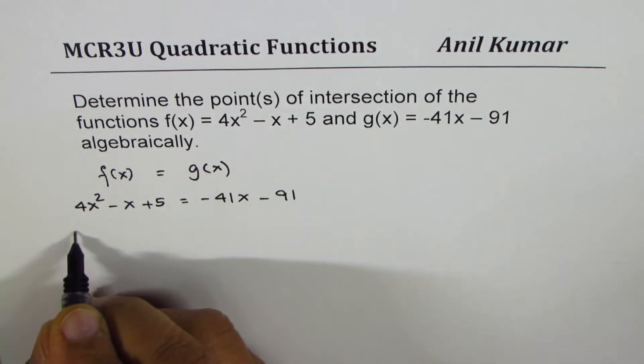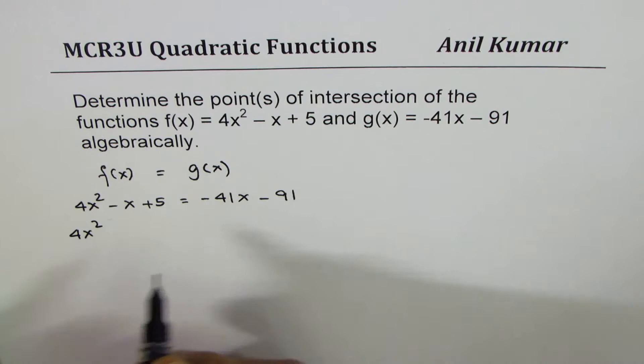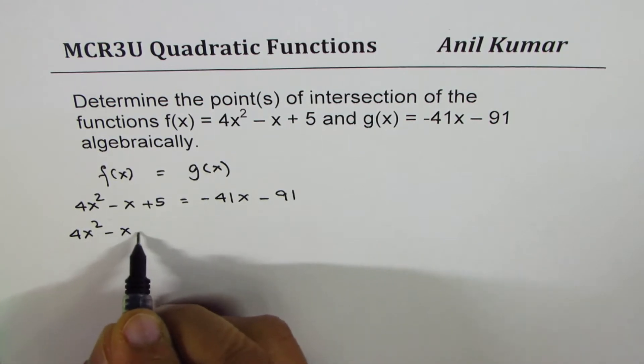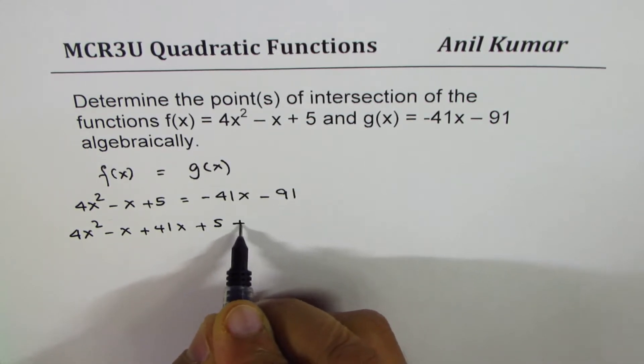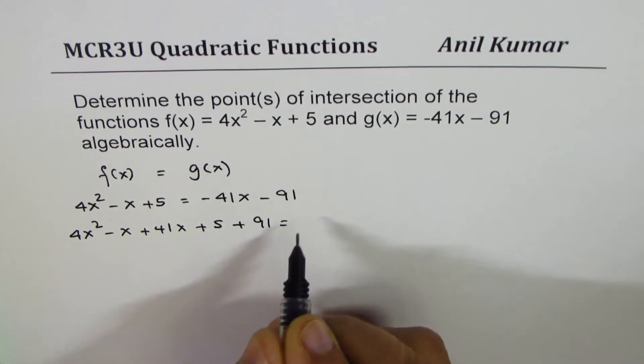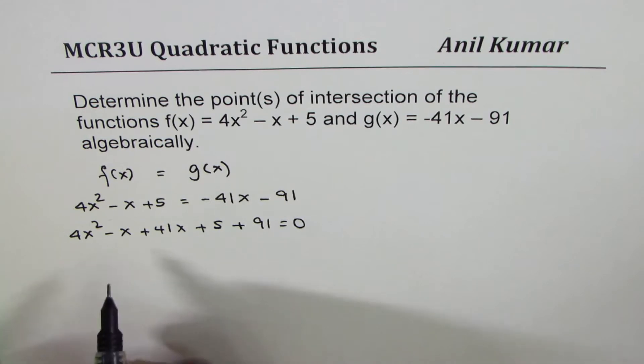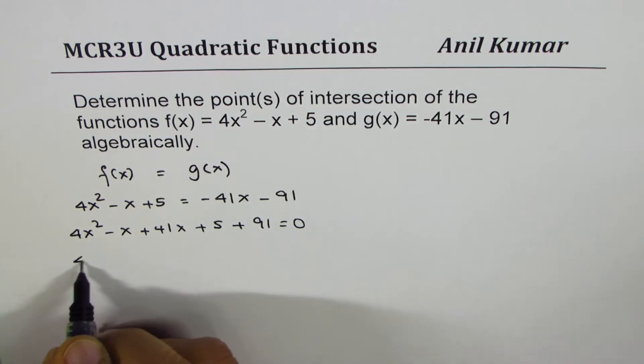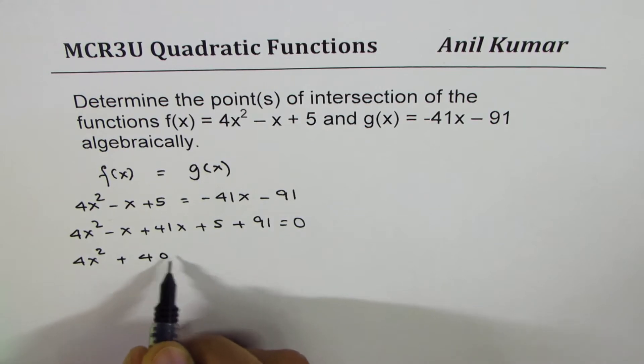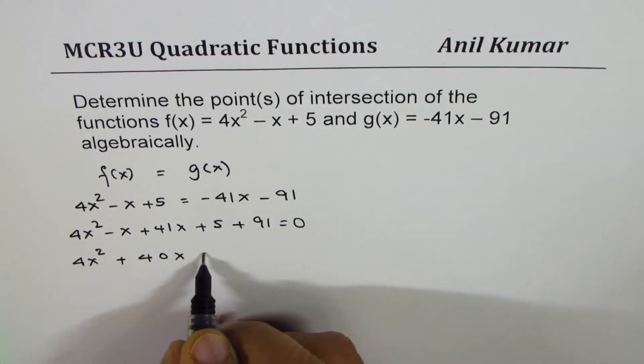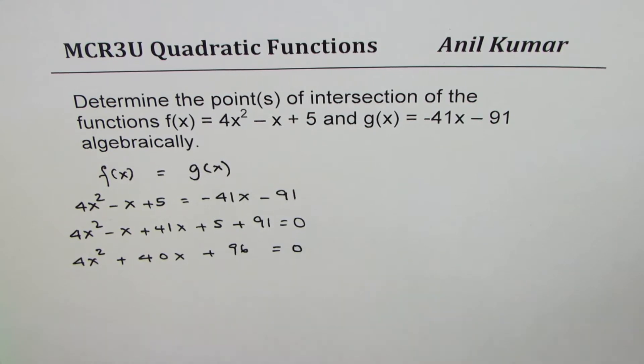Bring them together. So we have 4x² - x + 41x + 5 + 91 = 0. Let's combine the like terms. We get 4x² + 40x + 96 = 0.